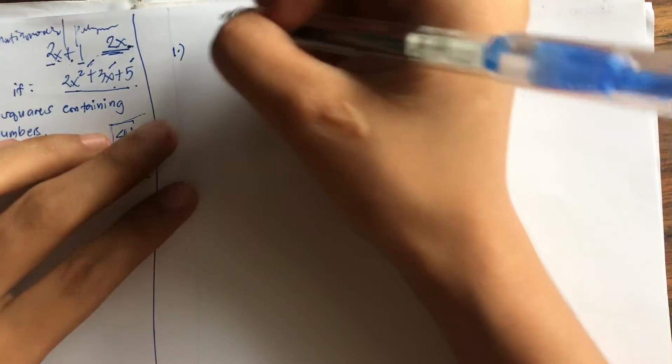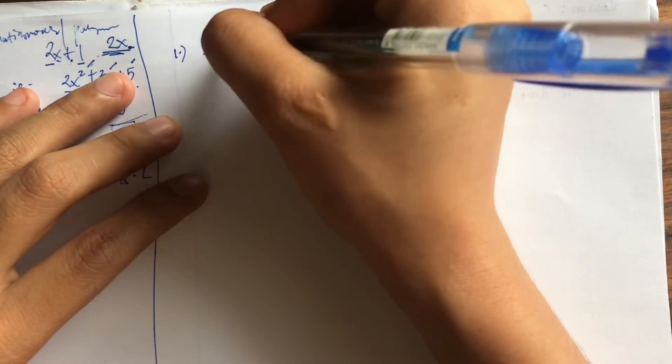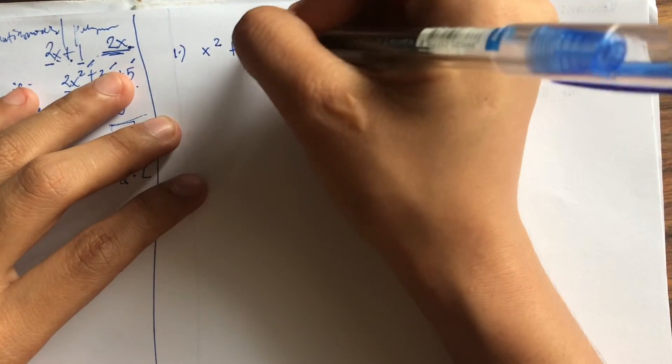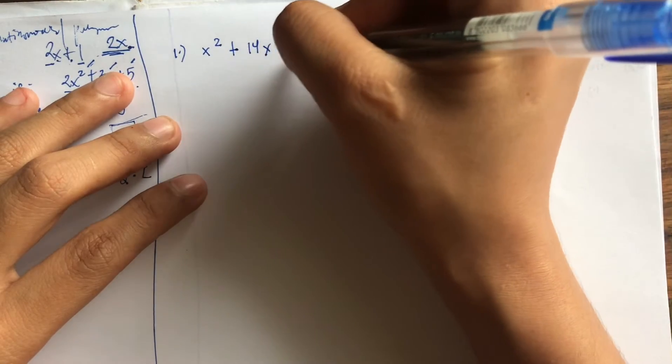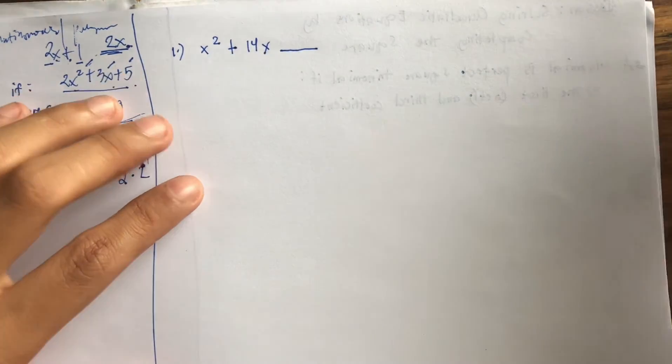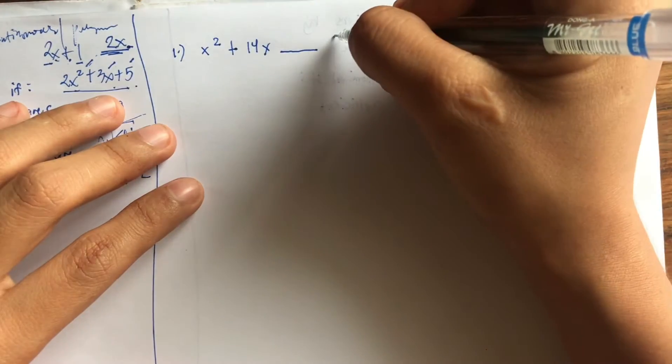Okay, we have here, let's make an example. Number 1: If we have x squared plus 14x and then we have blank. So this form could be x squared plus bx or x squared minus bx.